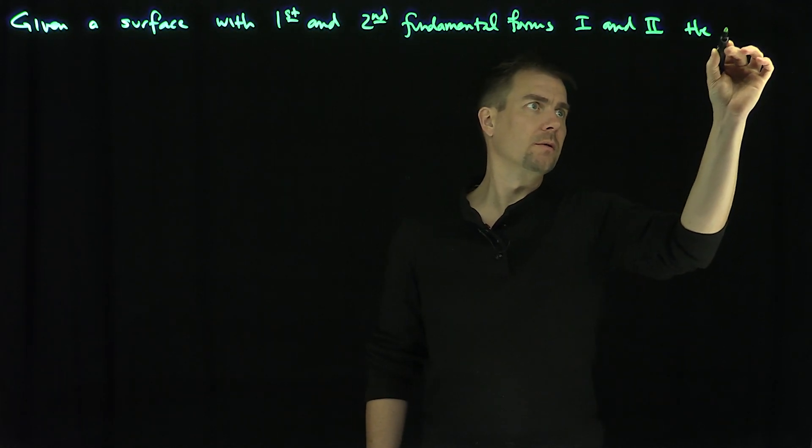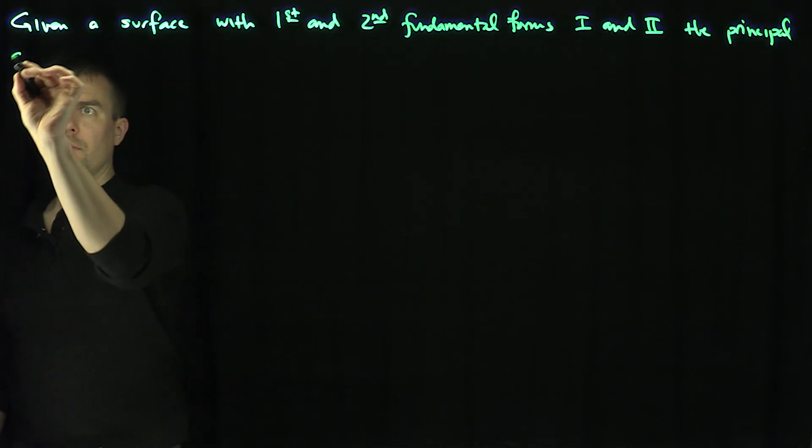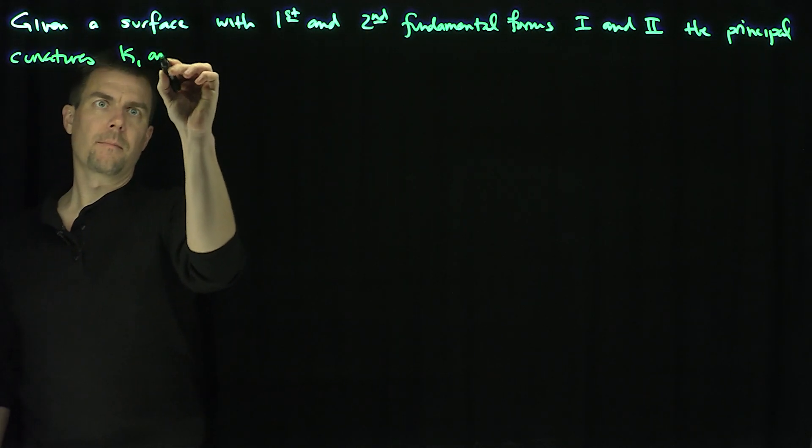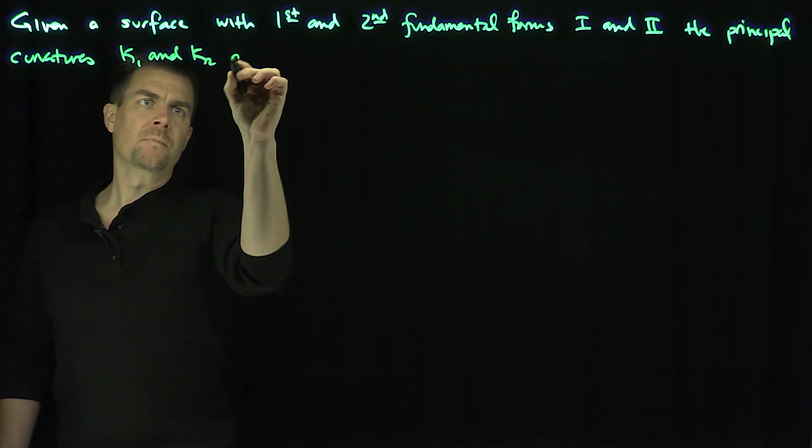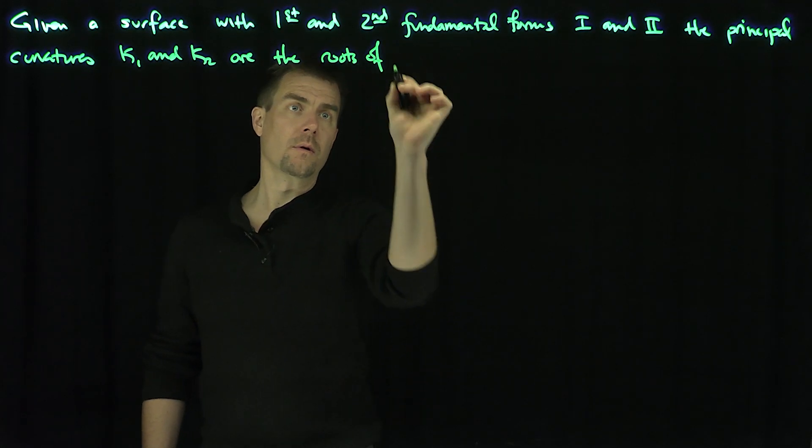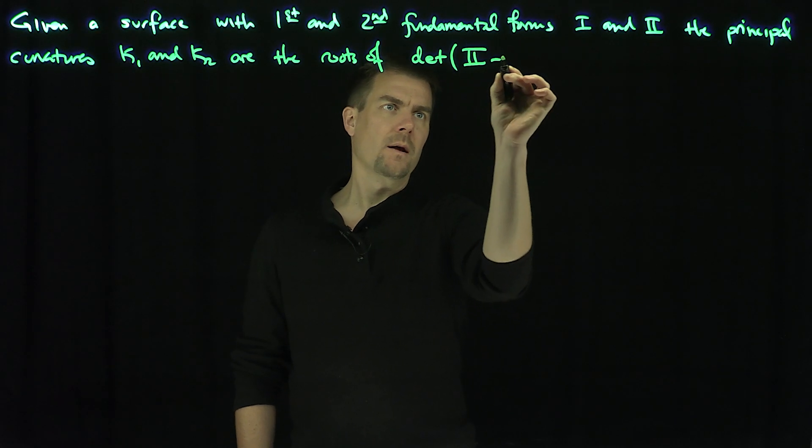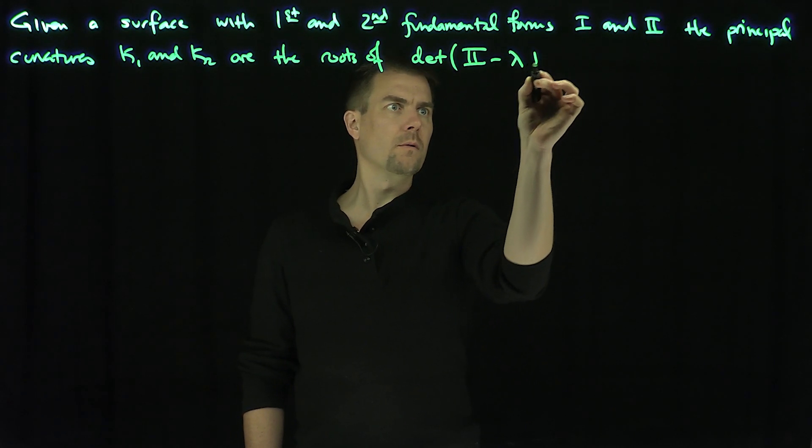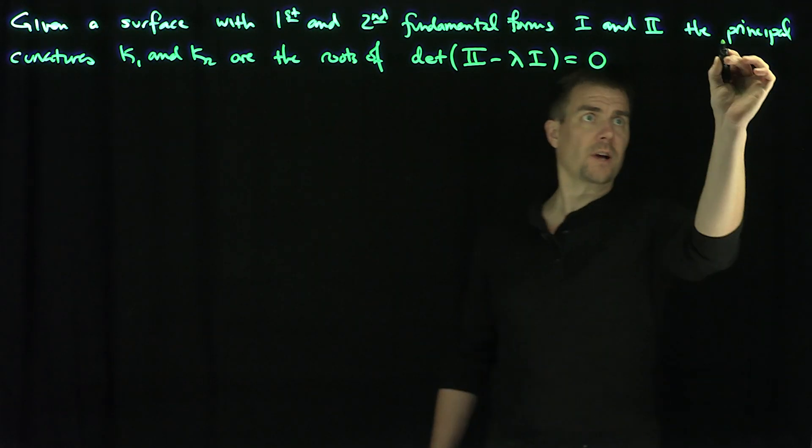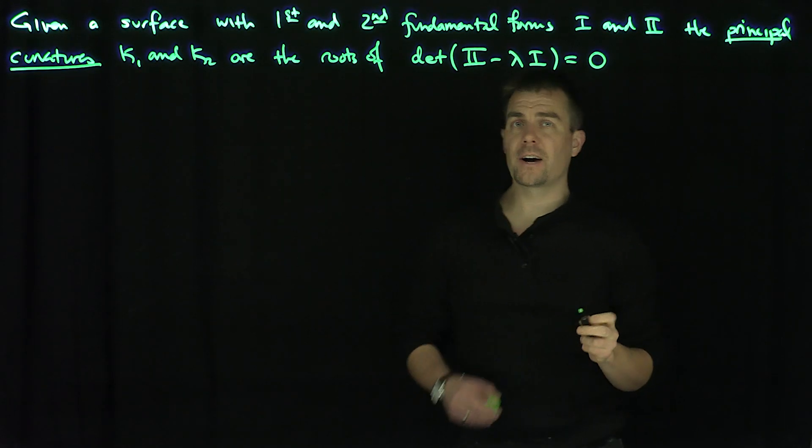The principal curvatures kappa 1 and kappa 2 are the roots of the equation determinant of 2 minus lambda 1 equals 0. Those are the principal curvatures. We've seen a ton of examples of computing these principal curvatures. And so now what I want to do is I'm going to define two things.